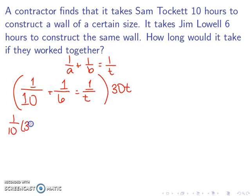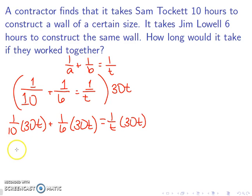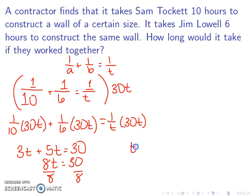So I have 1 over 10 times 30t plus 1 over 6 times 30t is equal to 1 over t times 30t. So this is 3t plus 5t is equal to 30. So 8t is equal to 30. We can then divide both sides by 8. So I get t is 30 over 8. And once we simplify this, we get 3 and 3 fourths. So it will take them 3 and 3 quarters hours.